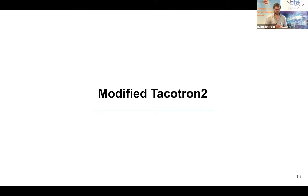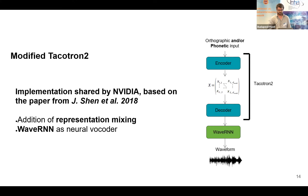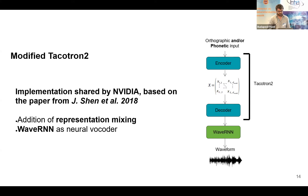Now let's look at the modifications we made to the TACOTRON2 implementation. TACOTRON2 is an encoder-decoder architecture proposed by Jichen and colleagues in 2018. The encoder computes a hidden representation of the input sequence — initially orthographic input — consumed sequentially by a decoder with location-sensitive attention to produce mel spectrograms one frame at a time. The mel spectrogram output is then turned into waveform via a neural vocoder; initially WaveNet was used, but we replaced it with WaveRNN to speed up the process while keeping very good audio quality. We also introduced a mixed embedding matrix to use both orthographic and phonetic input.